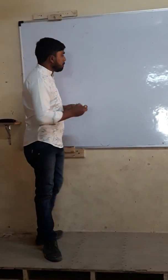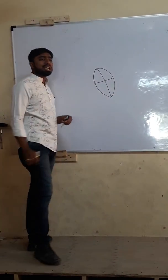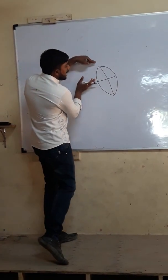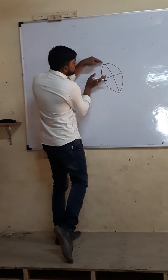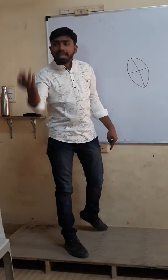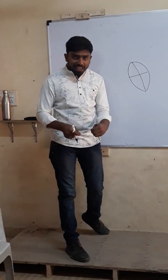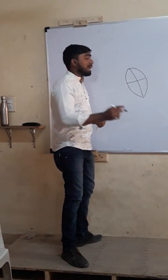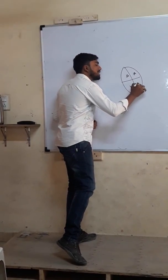The heart contains 4 chambers. There are 2 superior chambers and 2 inferior chambers. The 2 superior chambers are called atria, and the 2 inferior chambers are called ventricles.